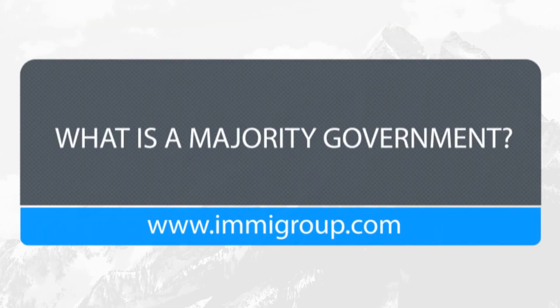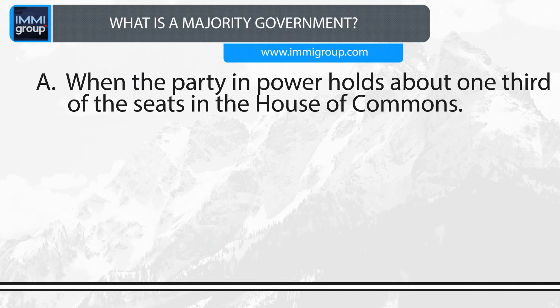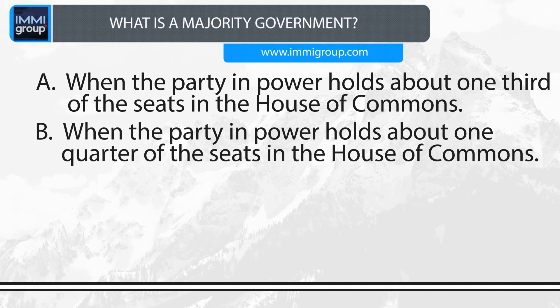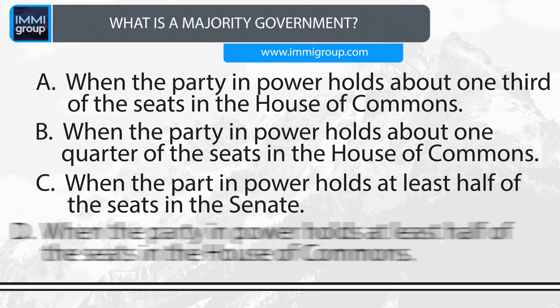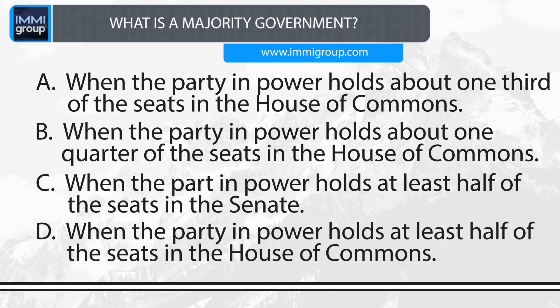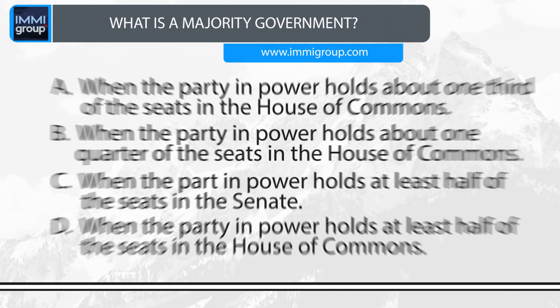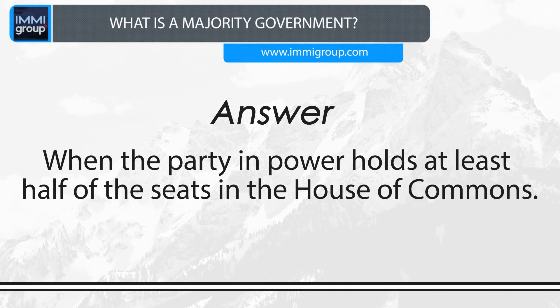What is a majority government? A. When the party in power holds about one-third of the seats in the House of Commons. B. When the party in power holds about one-quarter of the seats in the House of Commons. C. When the party in power holds at least half of the seats in the Senate. D. When the party in power holds at least half of the seats in the House of Commons. Answer: When the party in power holds at least half of the seats in the House of Commons.